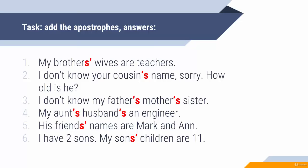'His friends' names are Mark and Anne.' The friends are two, which means that 'friends' is in plural, so you need to put the apostrophe after S.